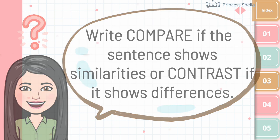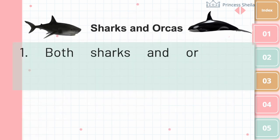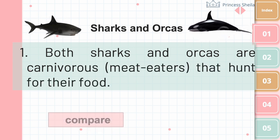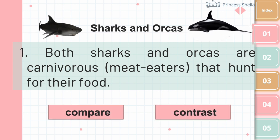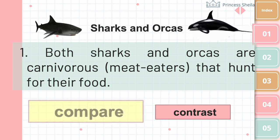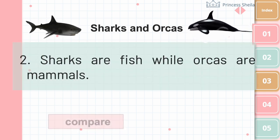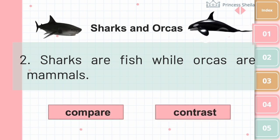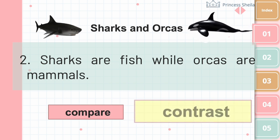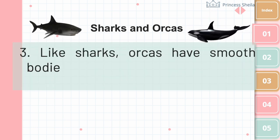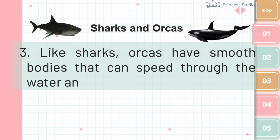One: Both sharks and orcas are carnivorous meat eaters that hunt for their food. — Compare. Two: Sharks are fish, while orcas are mammals. — Contrast. Three: Like sharks, orcas have smooth bodies that can speed through the water and lots of sharp teeth. — Contrast.